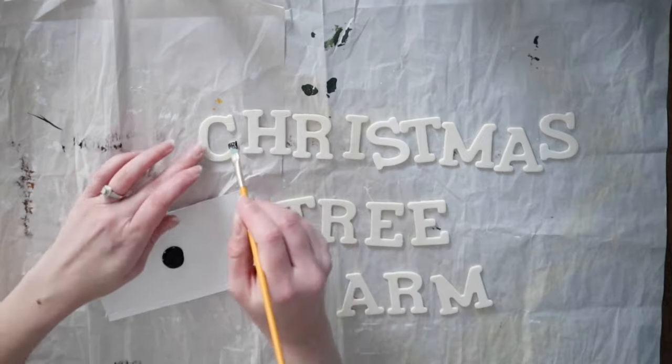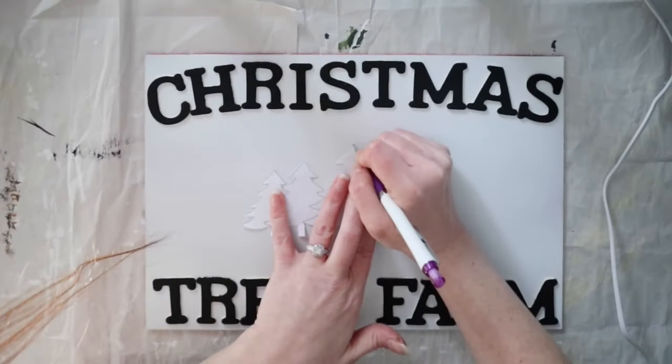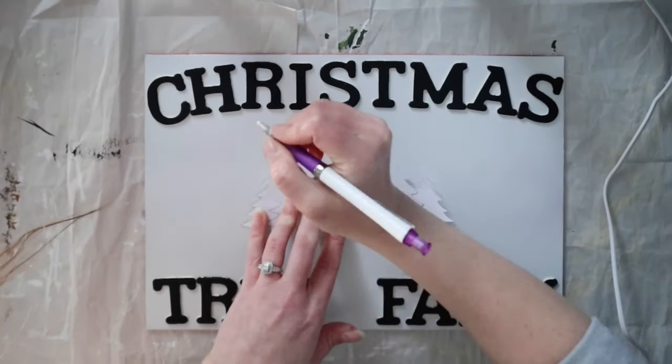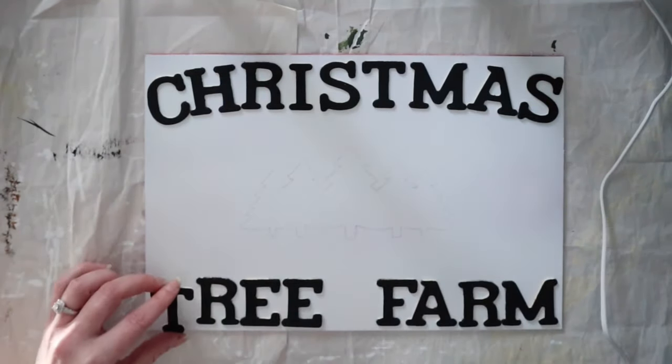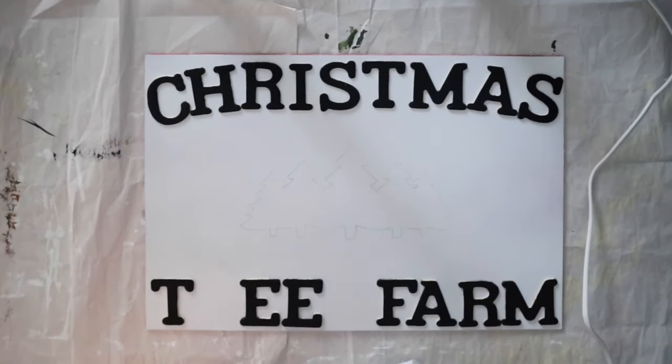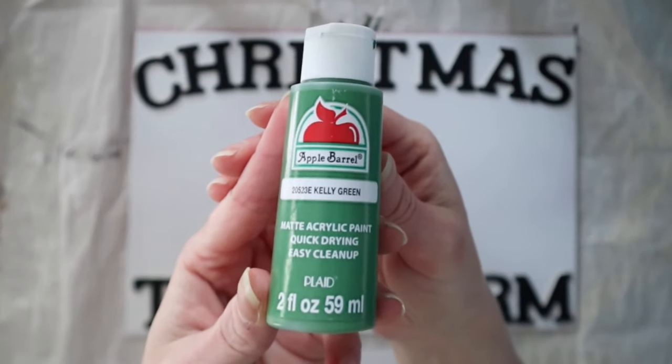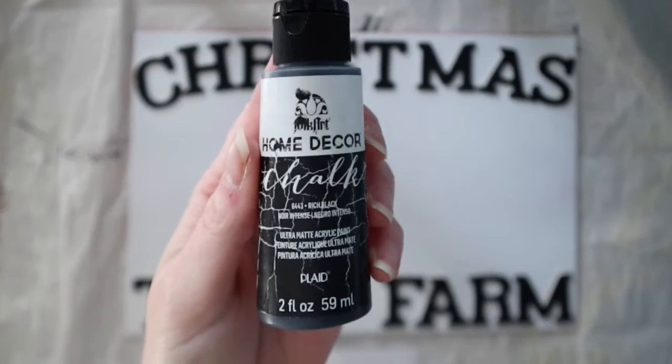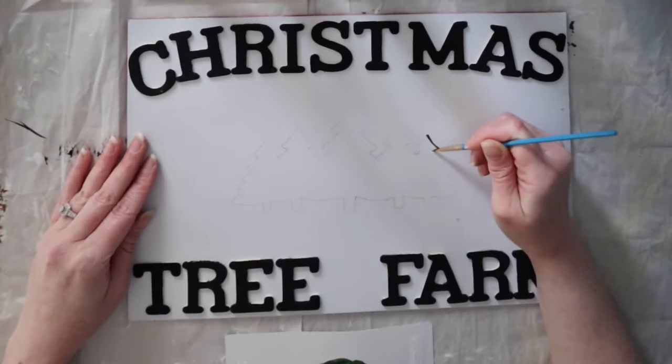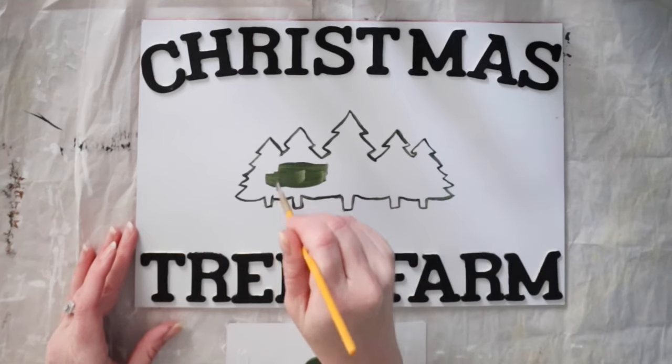I'm just painting the letters to spell out Christmas Tree Farm with my black chalk paint. I'm just arranging the letters on the sign and I traced out some trees from my computer screen. Then you're just going to glue all your letters to the sign. I'm just going to be mixing some green, brown, and a little bit of black paint.